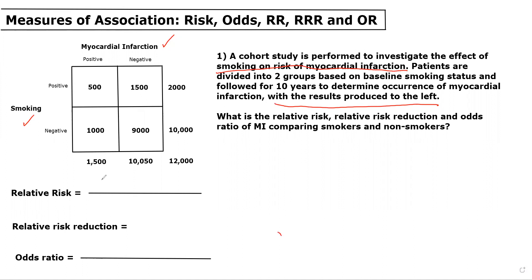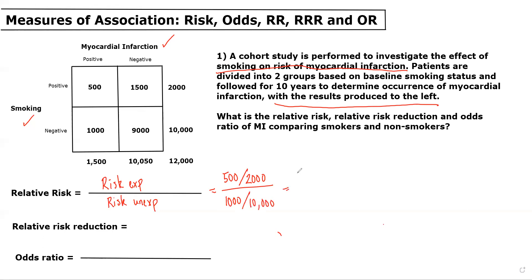So for the relative risk, we would do the risk among the exposed divided by the risk among the unexposed. We remember that to calculate risk, we take the total number of people in the group who had the outcome and divide by the group total. So for the risk of the exposed, we would do among smokers the number who had an MI divided by the total number of smokers. And for non-smokers, we would do the number of non-smokers who had an MI over the total number of non-smokers. This simplifies to 0.25 over 0.1, which is equal to 2.5. So we would say smokers have two and a half times the 10-year risk of MI compared to non-smokers.